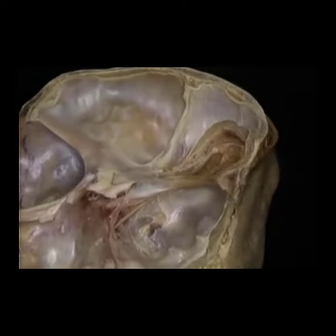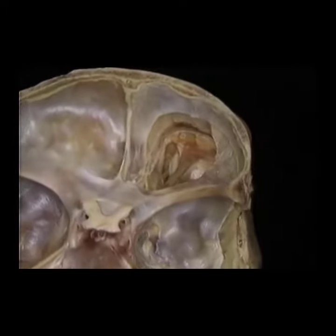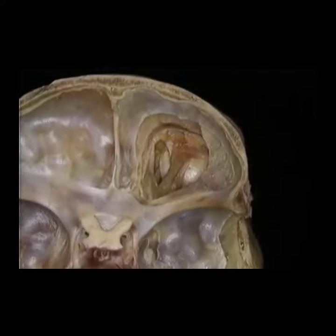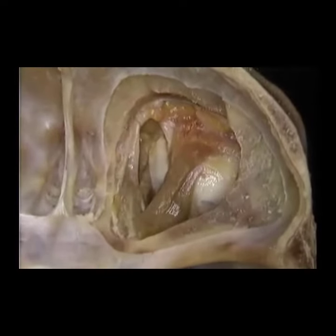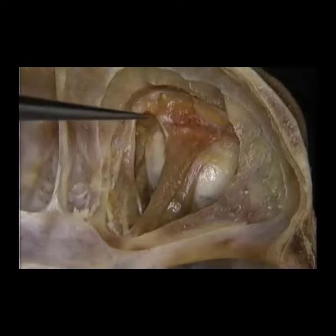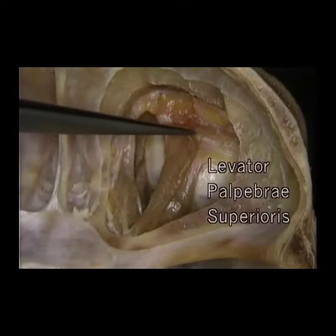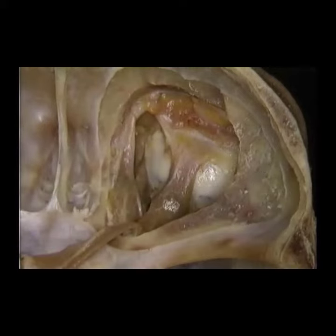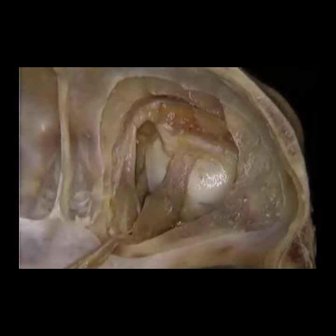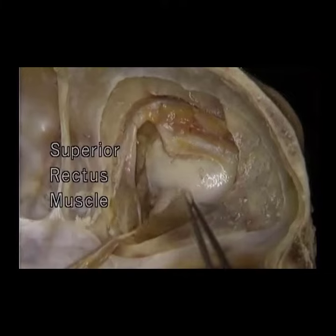To follow these nerves, we'll move forward to the orbit again. We'll divide and displace the two muscles in the roof of the orbit. These are the levator of the upper eyelid, levator palpebrae superioris, and beneath it, the superior rectus muscle.